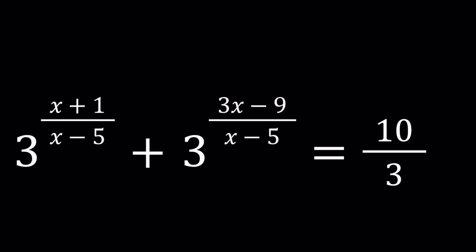We have 3 to the power (x+1)/(x-5) plus 3 to the power (3x-9)/(x-5) equals 10/3. And we're going to be solving for x values.